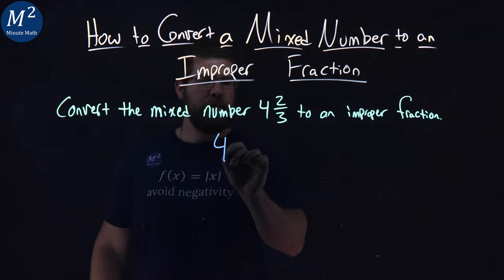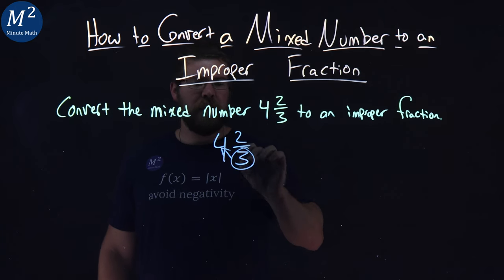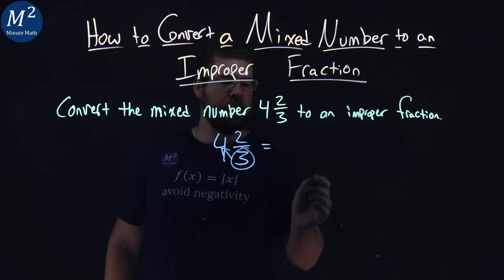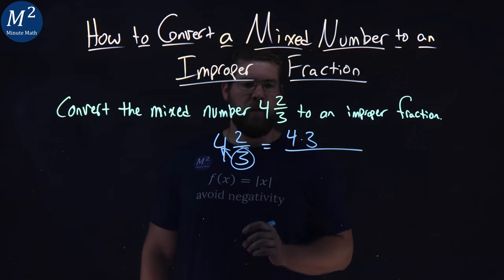We have our four and two-thirds. We're going to take this three and first multiply it by the four here. So, I'm going to take four times the three.